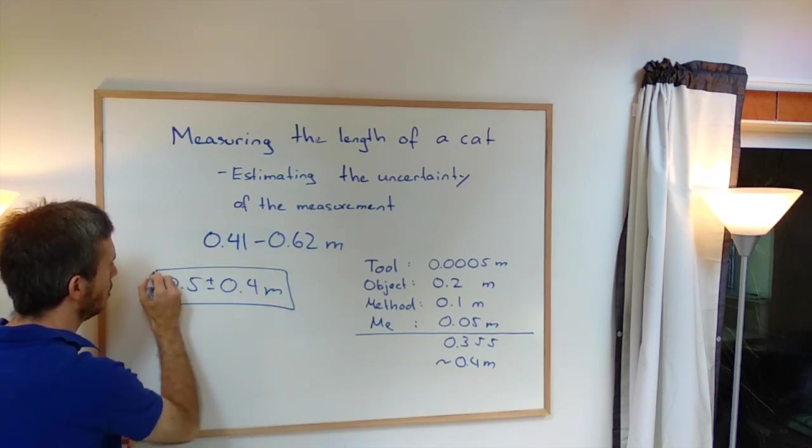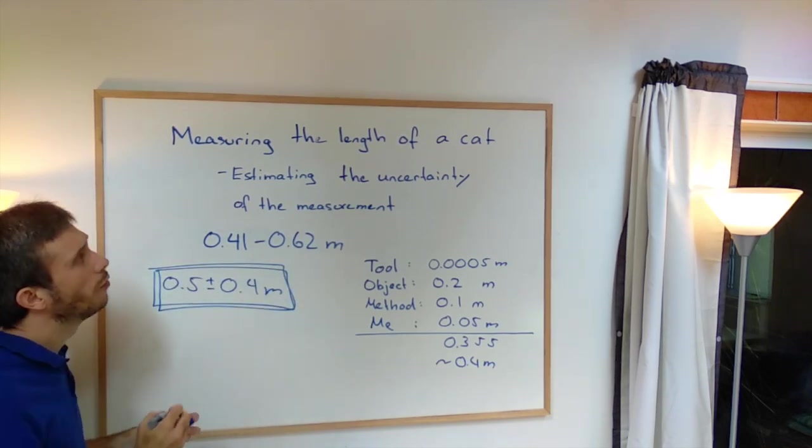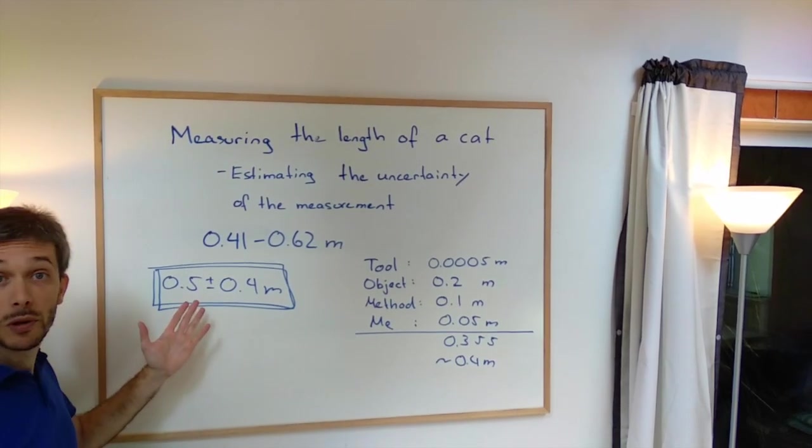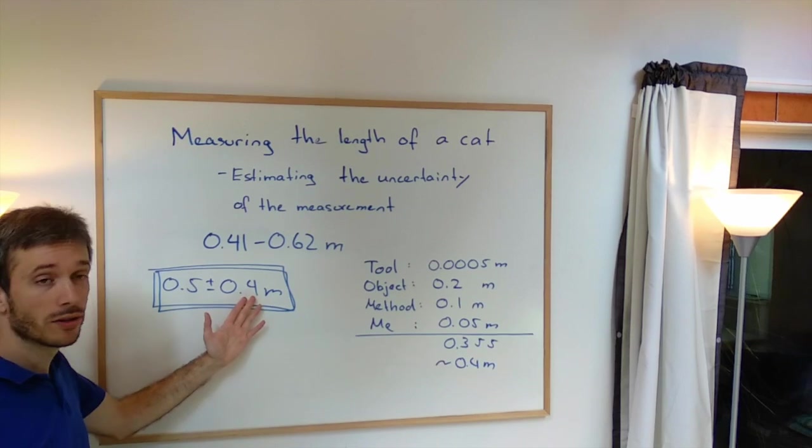So 0.5 plus minus 0.4 meters. And this will be the final answer for the length of my cat. 0.5 meters plus minus 0.4, uncertainty.